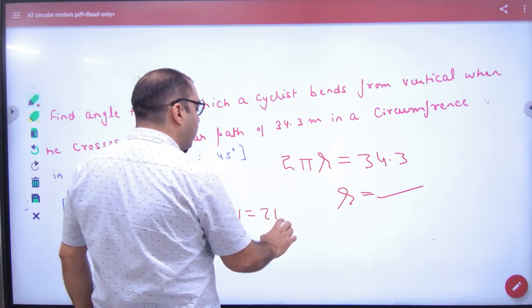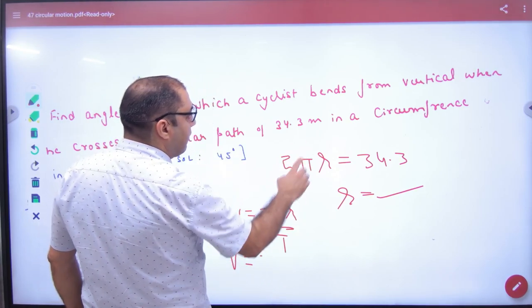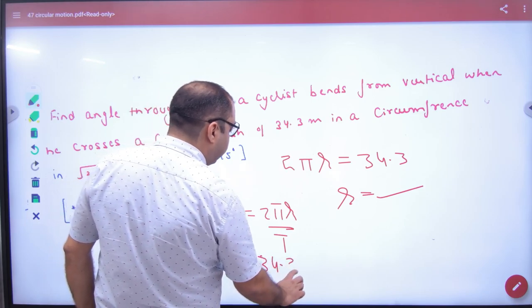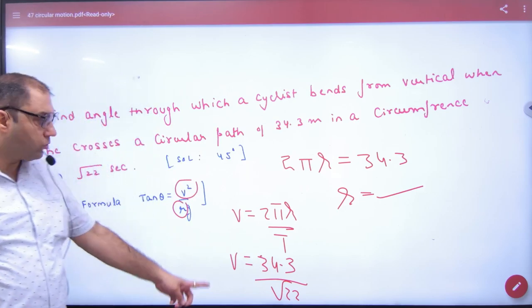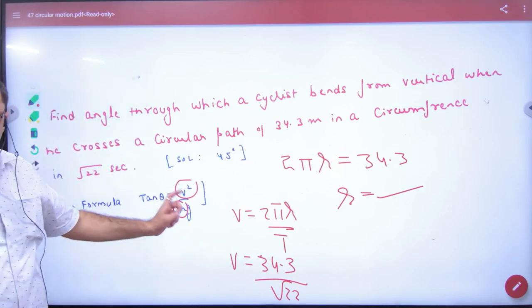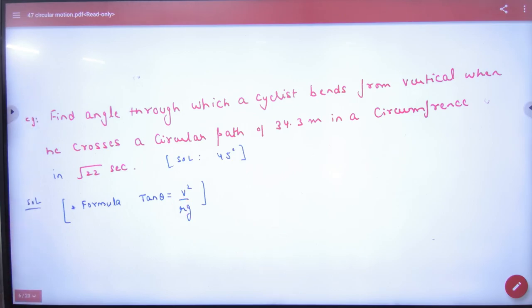Then you need v. What is velocity? Total distance by total time. Now, total distance by total time. How much distance is given? 34.3. And how much time is covered? 22. So here, v square put, r put, g put, what will be done? Tan theta value will be found. Theta is 45 degrees.